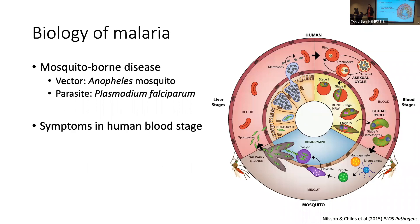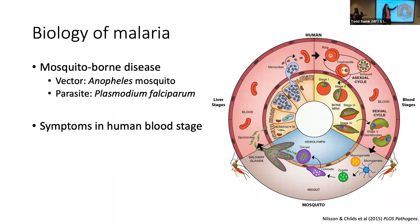Plasmodium falciparum is one of five species that can infect humans, but it's responsible for most of the mortality and morbidity we see in sub-Saharan Africa. The hallmark symptoms — cyclical fevers, anemia — happen during the stage when the parasite lives within human red blood cells. The parasite can live there, repeatedly infecting red blood cells, for weeks, months, or even years. It goes through a liver-blood-mosquito-liver-blood cycle.